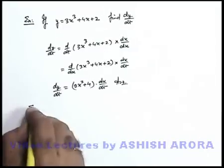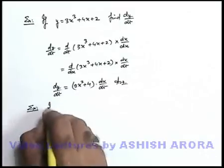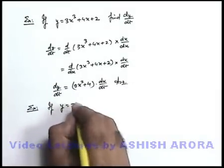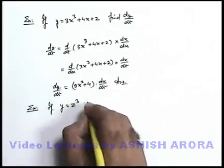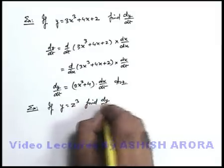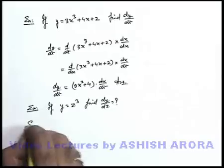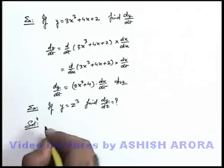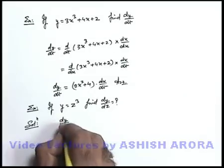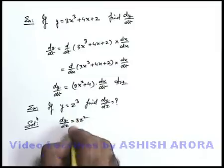Let's discuss one more example. We are given: if y = z³ and we are required to find dy/dz. We can directly differentiate this — dy/dz = 3z².